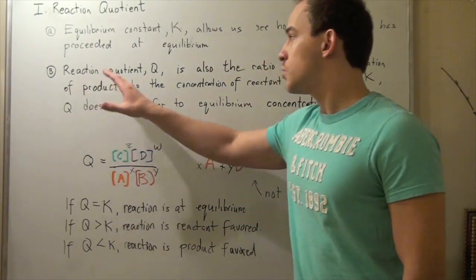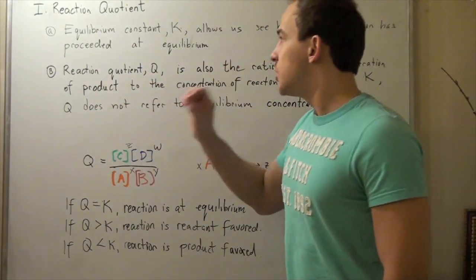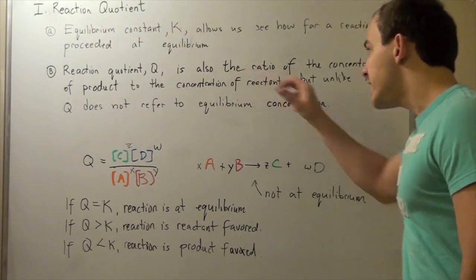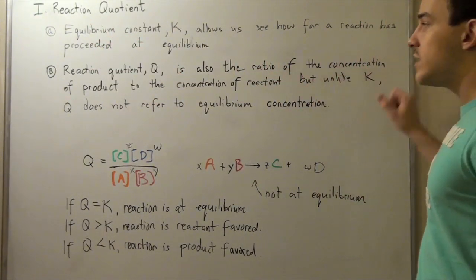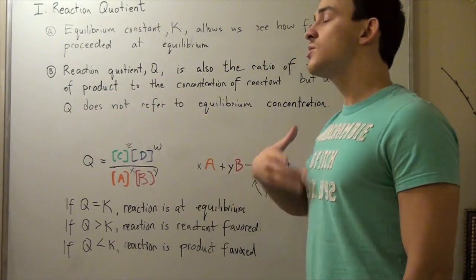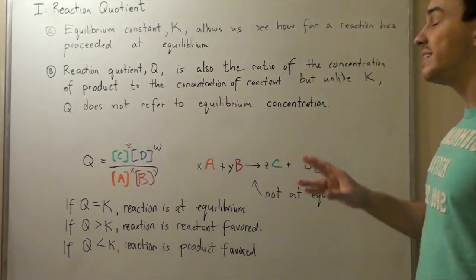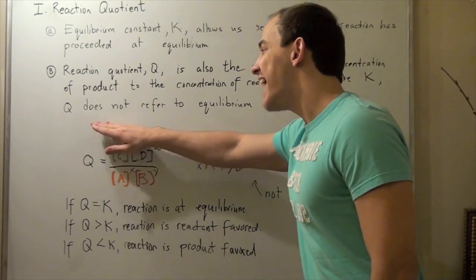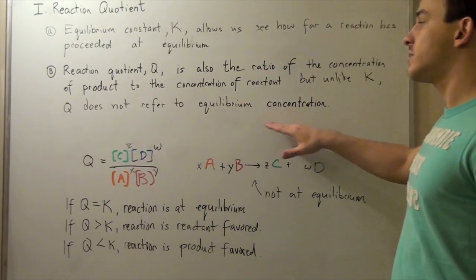Now the reaction quotient Q is also, just like the equilibrium constant K, the ratio of the concentration of products to the concentration of reactants. But unlike K, Q does not refer to the equilibrium concentration.